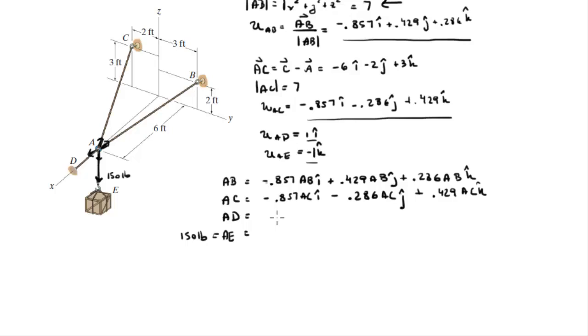a, d is equal to a, d times 1 in the i plus 0 on the j plus 0 on the k. And a, e is equal to a, e times 1 in the k, so it's 0 on the i plus 0 on the j, but we know that a, e is 150 pounds, so it's minus 150 in the k.